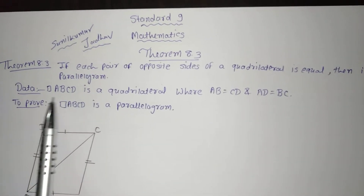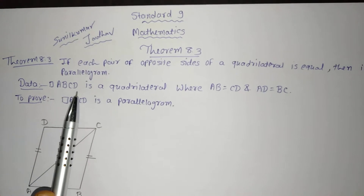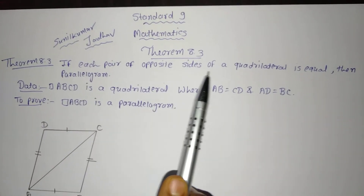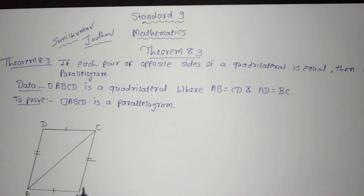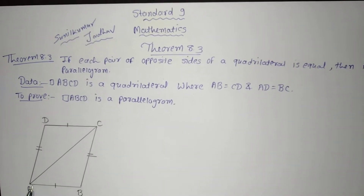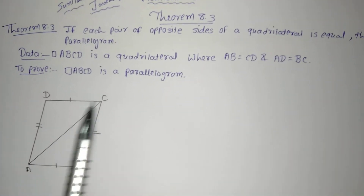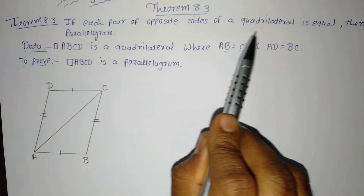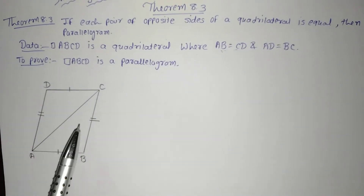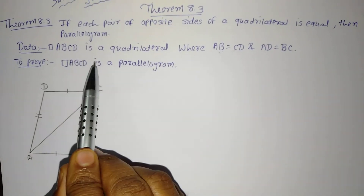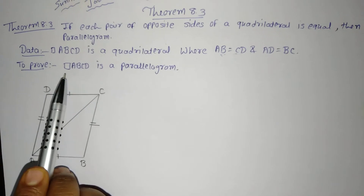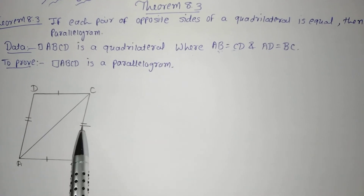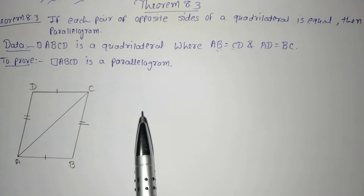What is given in the data: quadrilateral ABCD is given where AB is equal to CD, as each pair of opposite sides of the quadrilateral is equal. In the figure, AB and CD are both of equal measure. So AB is equal to CD and AD is equal to BC, as it is mentioned that opposite sides of the quadrilateral are equal. This is given in the data. We need to prove that quadrilateral ABCD is a parallelogram.